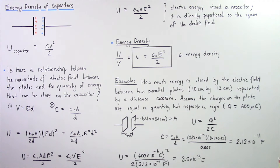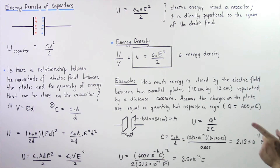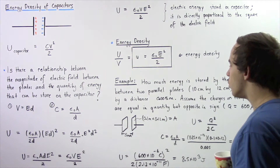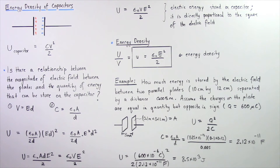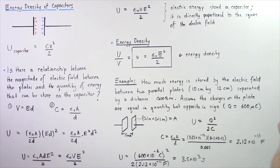The plates are 10 cm by 12 cm, separated by a distance of 0.005 meters. Assume that the charges on the plates are equal in quantity but opposite in sign, and that Q is equal to 600 microcoulombs.